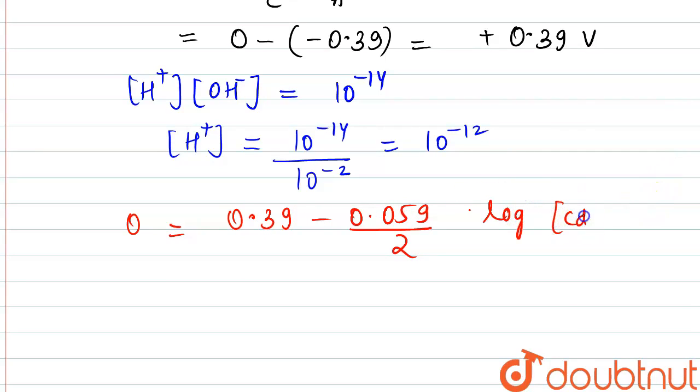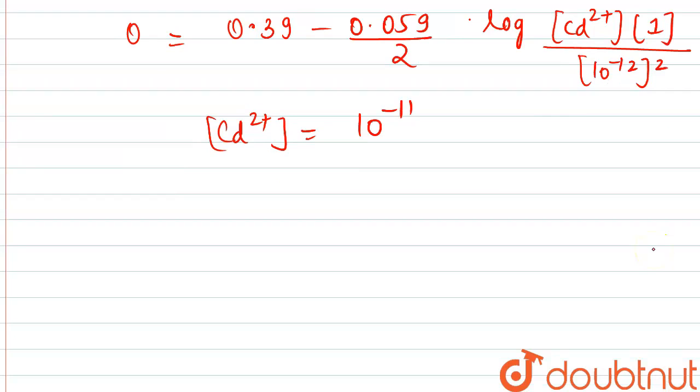...cadmium 2+ ion concentration is to be calculated. Pressure of hydrogen given as 1 bar, and we have calculated H+ ion concentration as 10^-12 raised to the power square. So on solving, cadmium 2+ ion concentration from here comes out to be equal to 10^-11.